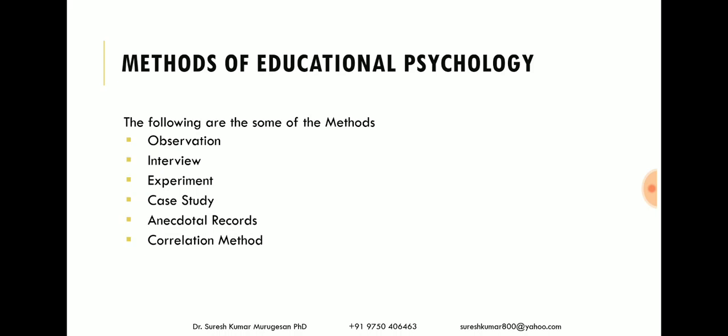We have seen that different people gave contributions for the development of education psychology. Now we are going to see the methods of education psychology. Methods are the ways in which we study or collect data in the field to understand the concepts. The following are important methods used in education psychology: observation — both natural and controlled laboratory observation — interview, experiments, case study, anecdotal record, and correlation. These methods help us understand how teaching and learning occur in and outside the classroom.